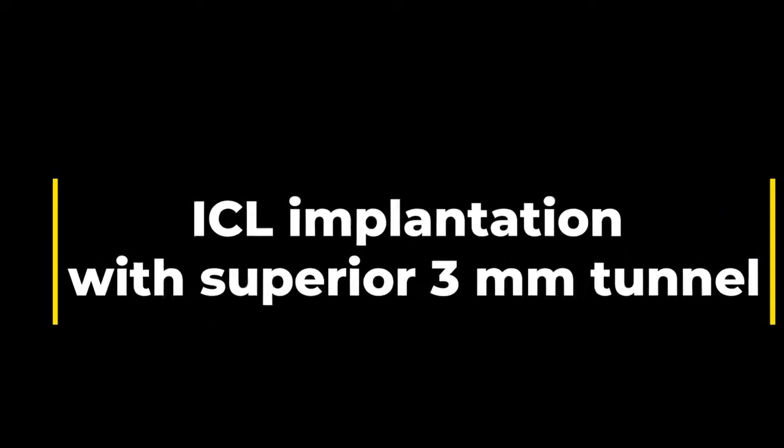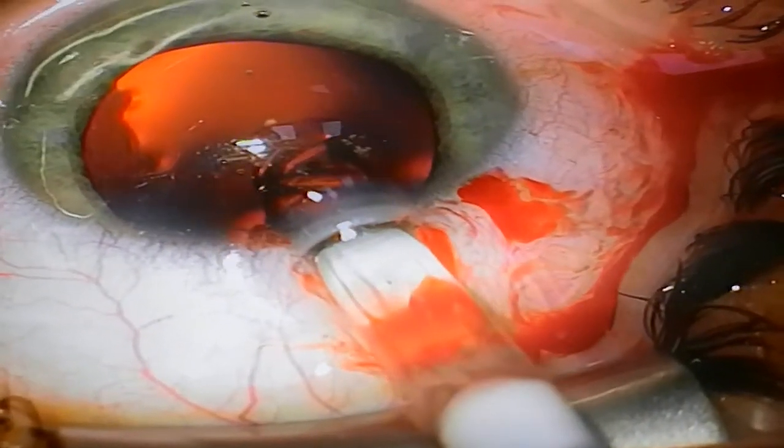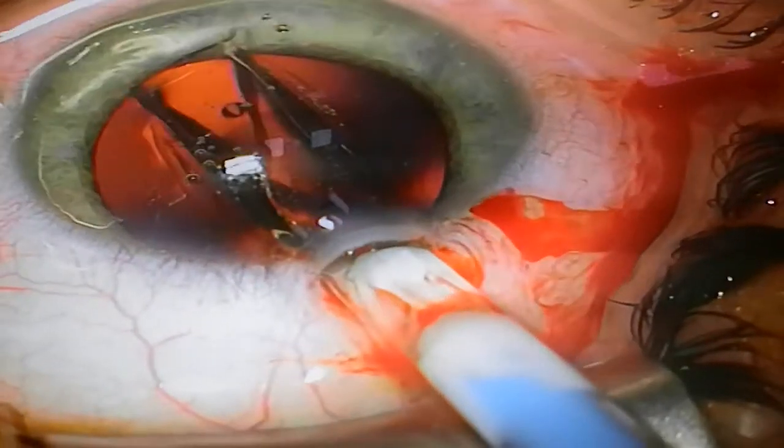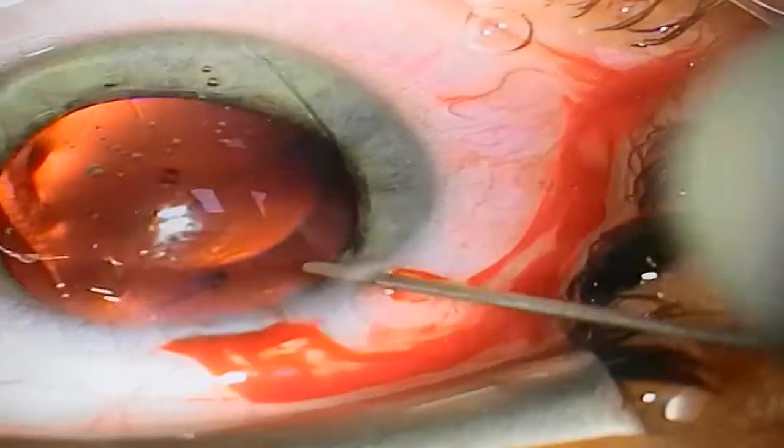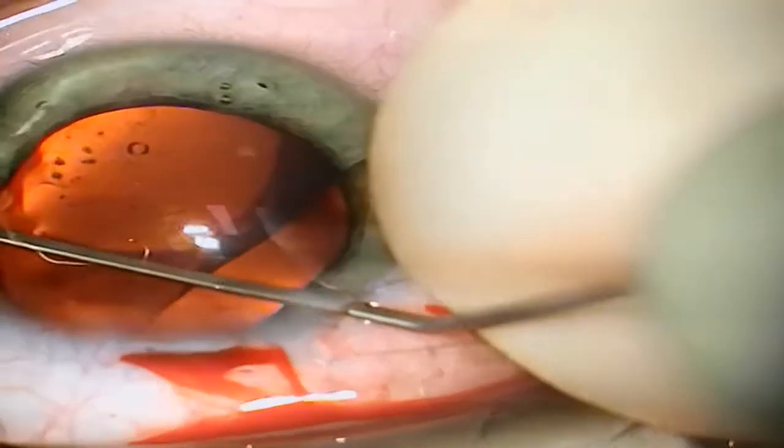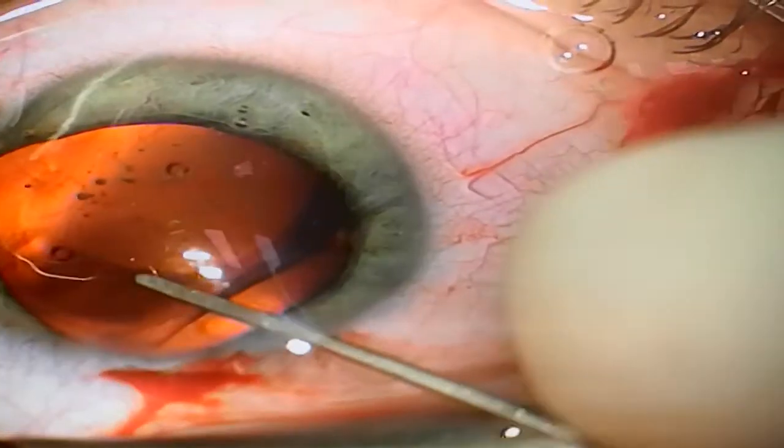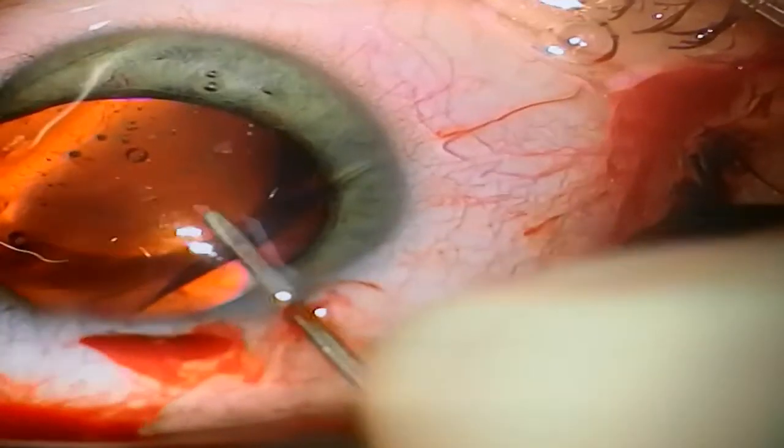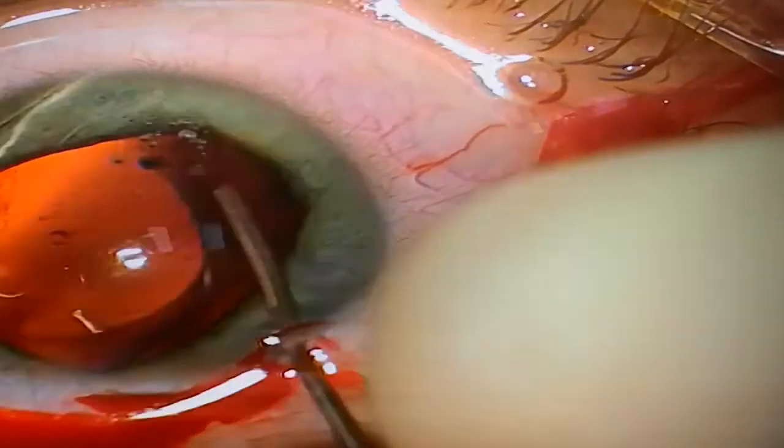Very easy. And after we loaded the lens, we use the normal technique of implanting the lens, which we all know. Here we chose a superior tunnel. It is supposedly more difficult, but I find it very helpful in correcting a very small amount of astigmatism, which is normally with the rule. This way the wound is also covered by the upper lid and is more protected.